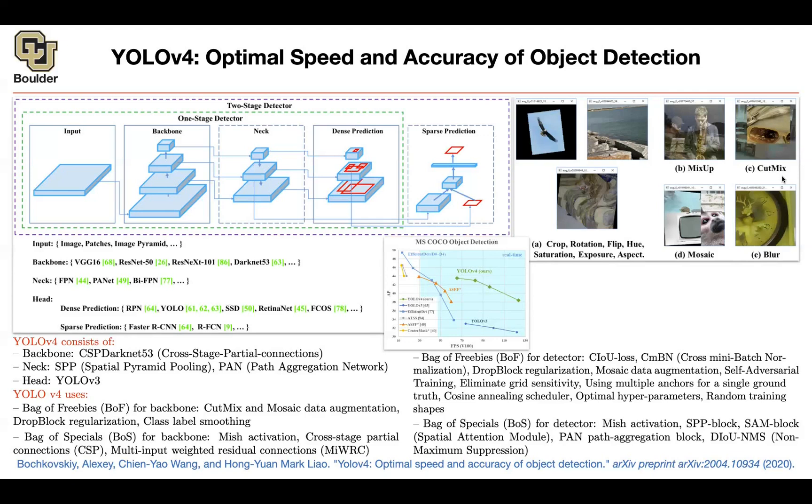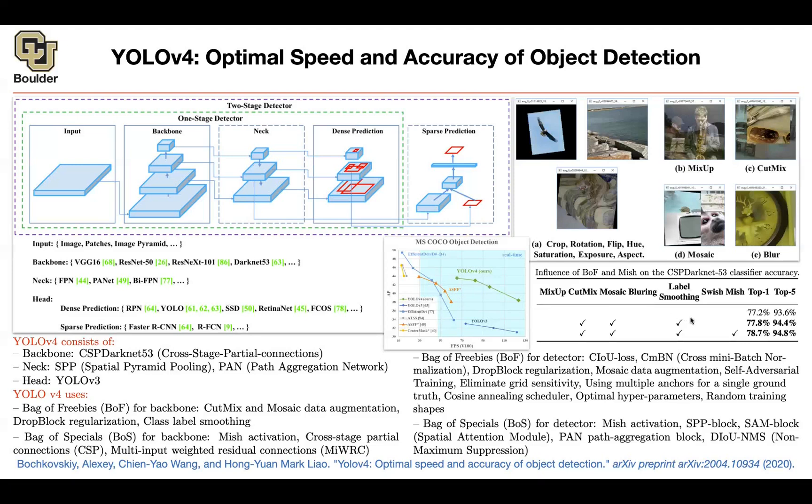So mix-up and CutMix are based on two images. You take two images and then you're going to adjust the image and then you're going to adjust the corresponding label. So mosaic is an extension of CutMix. It's good for detection and blurring is another idea. How do they help your classification? We know it's going to help the detection system. How does it help the classifier, the backbone?